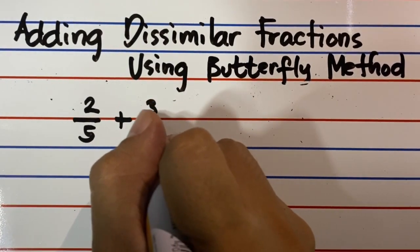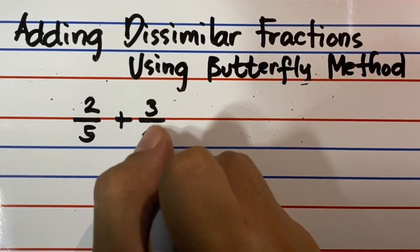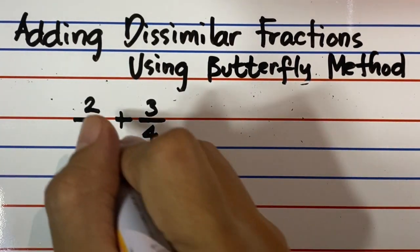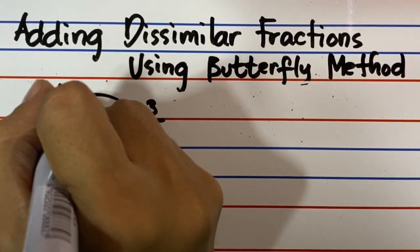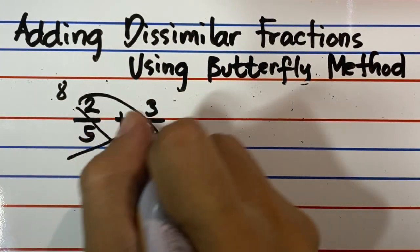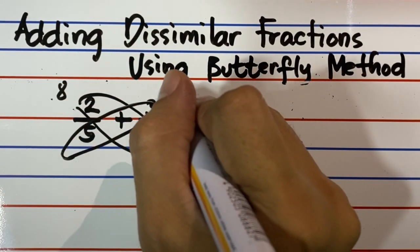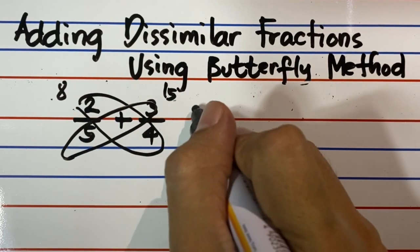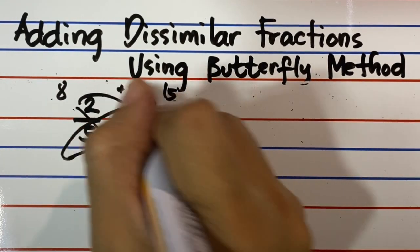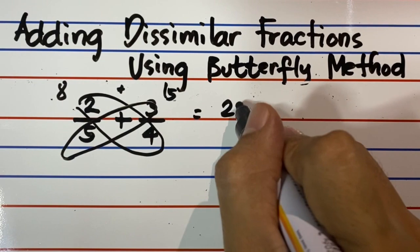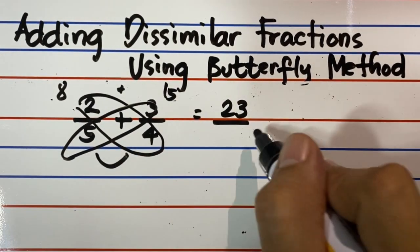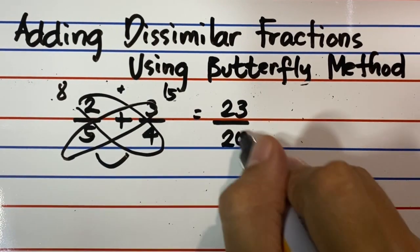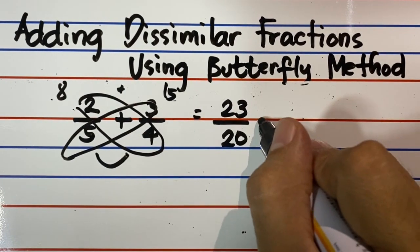2 fifths plus 3 fourths. Encircle 2 crossing over 4. 2 times 4 equals 8. Encircle 5 crossing over 3. 5 times 3 equals 15. Then add 8 and 15 as your numerator. It becomes 23. Multiply the two denominators 5 and 4 to get 20 as your denominator. The answer is 23 over 20.